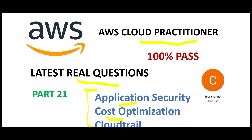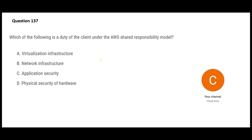Subscribe and like helps me understand the pulse of the audience so I can prepare more informative content. Don't forget to refer to the previous parts of this playlist. Let's jump into this question. We all know there is a shared responsibility model on AWS — certain tasks AWS will do, but certain tasks you will have to do. Out of these four tasks, which task do you have to do as a client that AWS will not do for you?